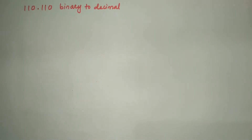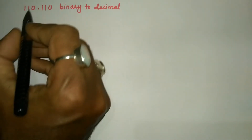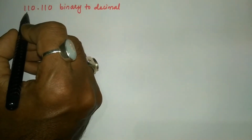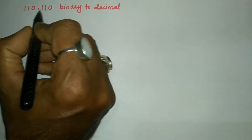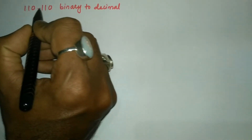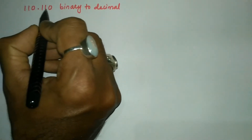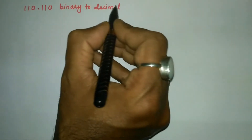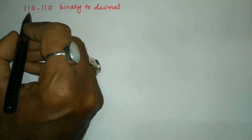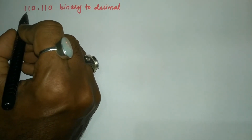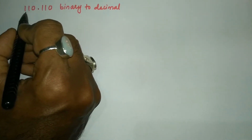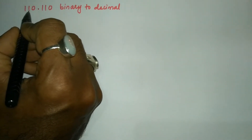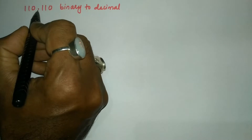Hello and welcome to Vision Academy. In this video we are going to study how to convert the given fractional binary number into a decimal number. Here we have been given with the number 110.110 binary to decimal.